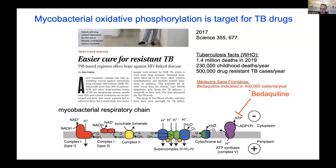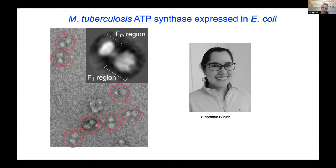We decided to purify and determine the structure of the mycobacterial ATP synthase. The first attempt by lab manager Stephanie Buehler was to express the ATP synthase operon in E. coli, as done previously for Hui Guo's Bacillus PS3 structure. That sort of worked — giving a few particles visible by negative stain — but yields were always terrible, the protein aggregated badly, and we couldn't improve it. However, this image won in a grant application to the Canadian Institutes of Health Research, which is no small feat. We celebrated and decided it was time to move on.